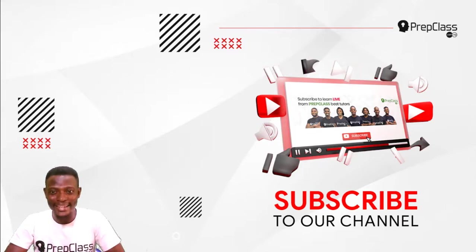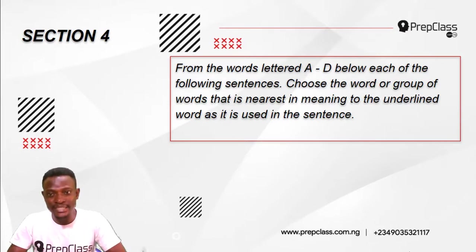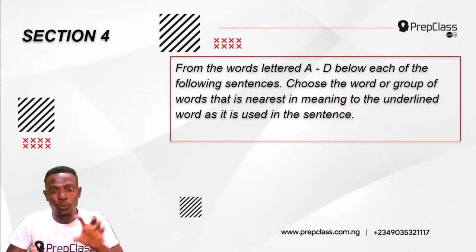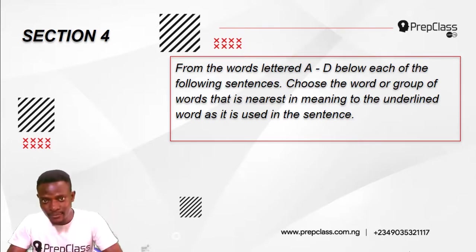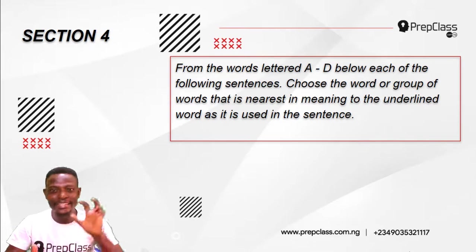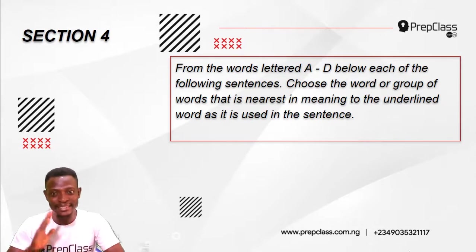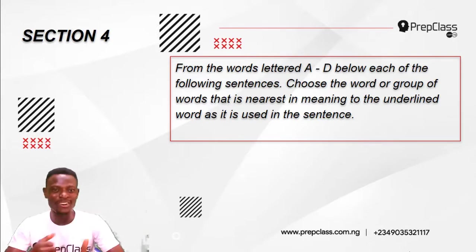Let's begin. For questions 31 to 35, the instruction reads: from the words lettered A to D below each of the following sentences, choose the word or group of words that is nearest in meaning to the underlined word as it is used in the sentence. So we are looking for the nearest in meaning to the underlined word.